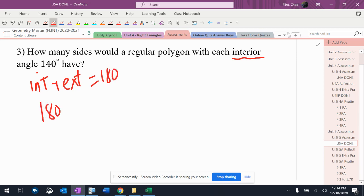If each interior is 140, then the exterior is 40. So that's the exterior angle. So now what I know is that I have a shape that has exterior angles that are all equal to 40.